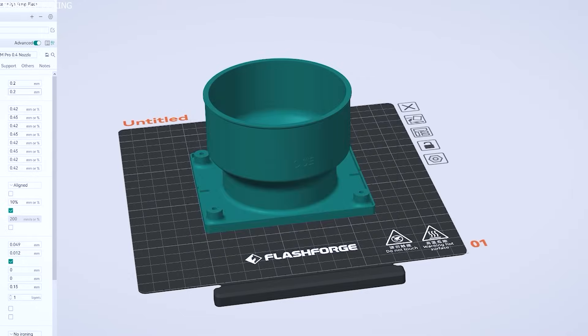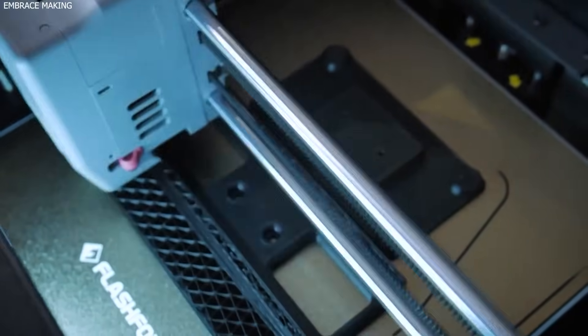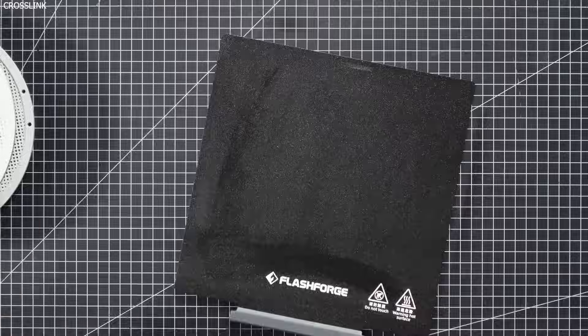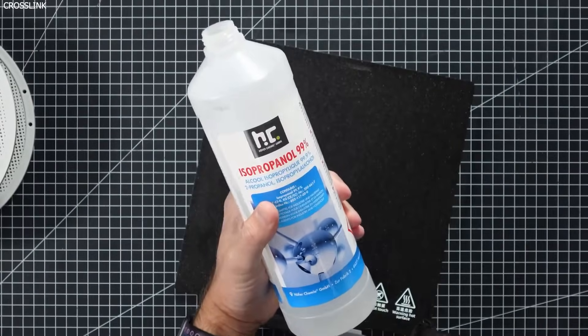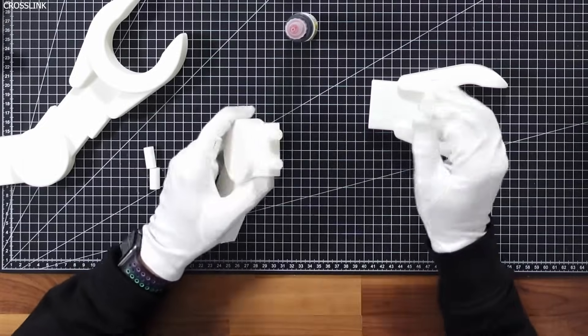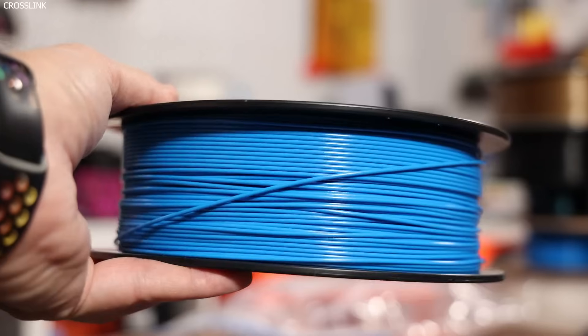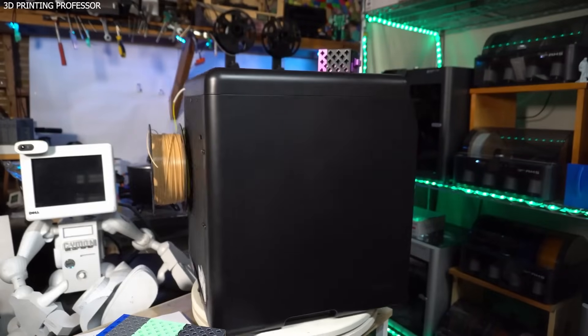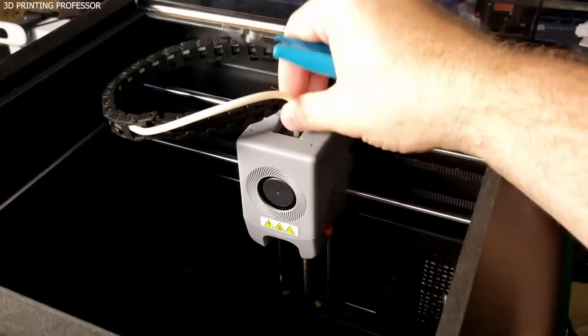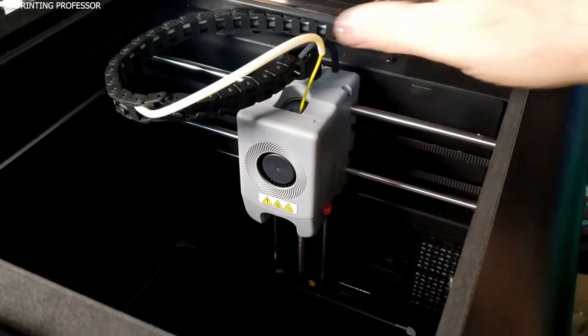One of its standout features is its fully enclosed design, which provides a stable printing environment while reducing noise and minimizing exposure to heated components. This is particularly important for younger users or those new to 3D printing. The printer operates at less than 50 dB, ensuring a quiet printing experience whether in a classroom or a home office.